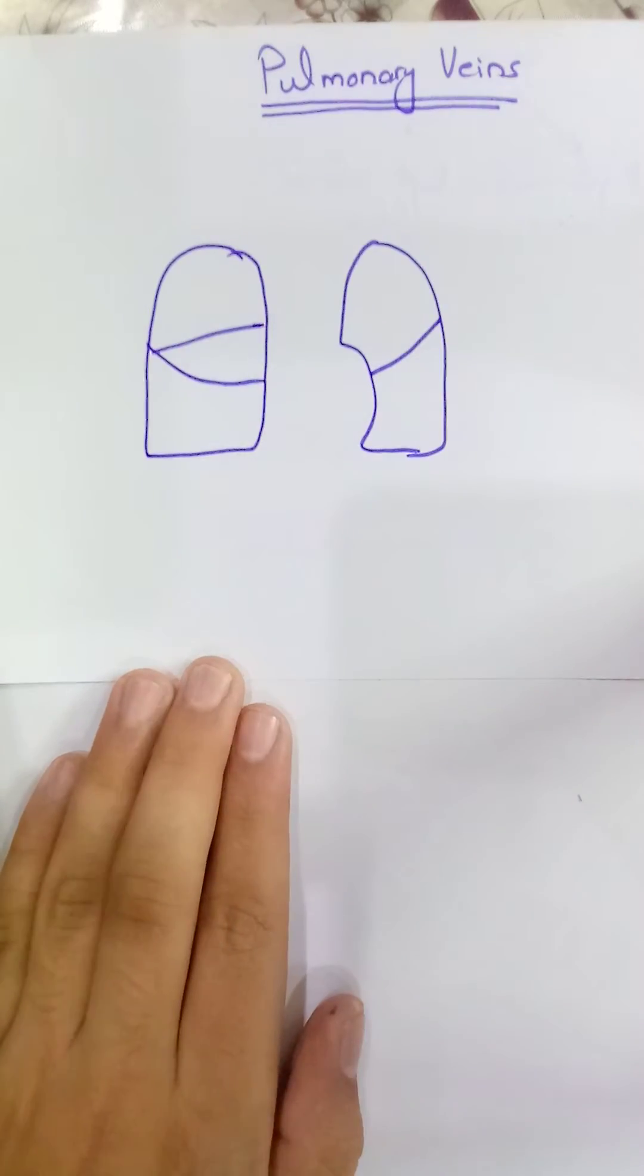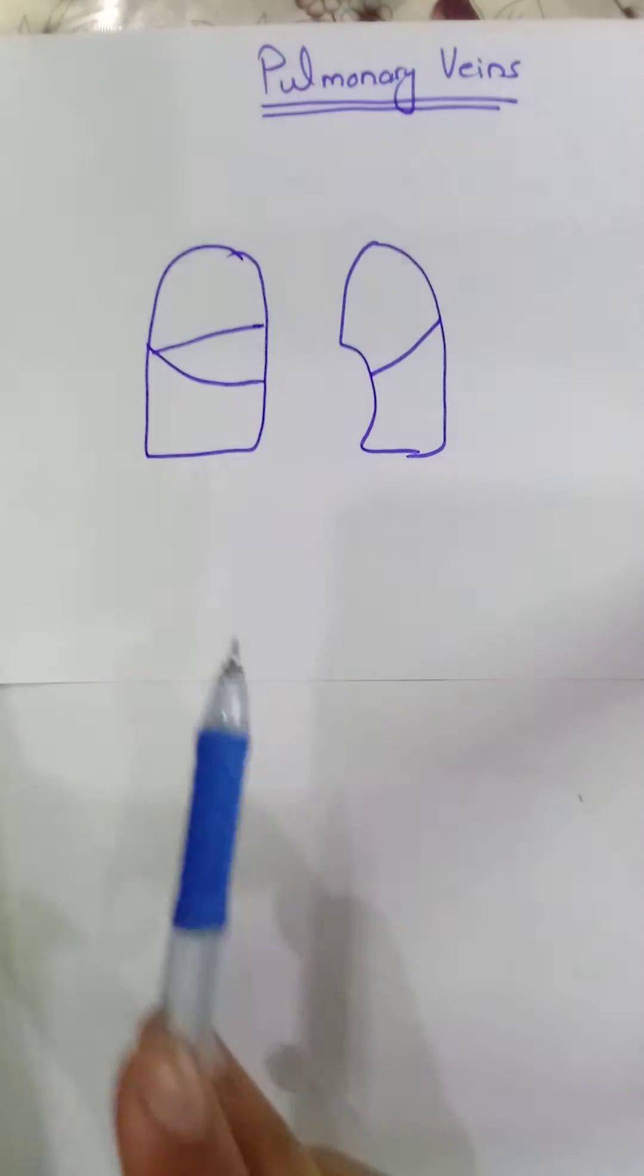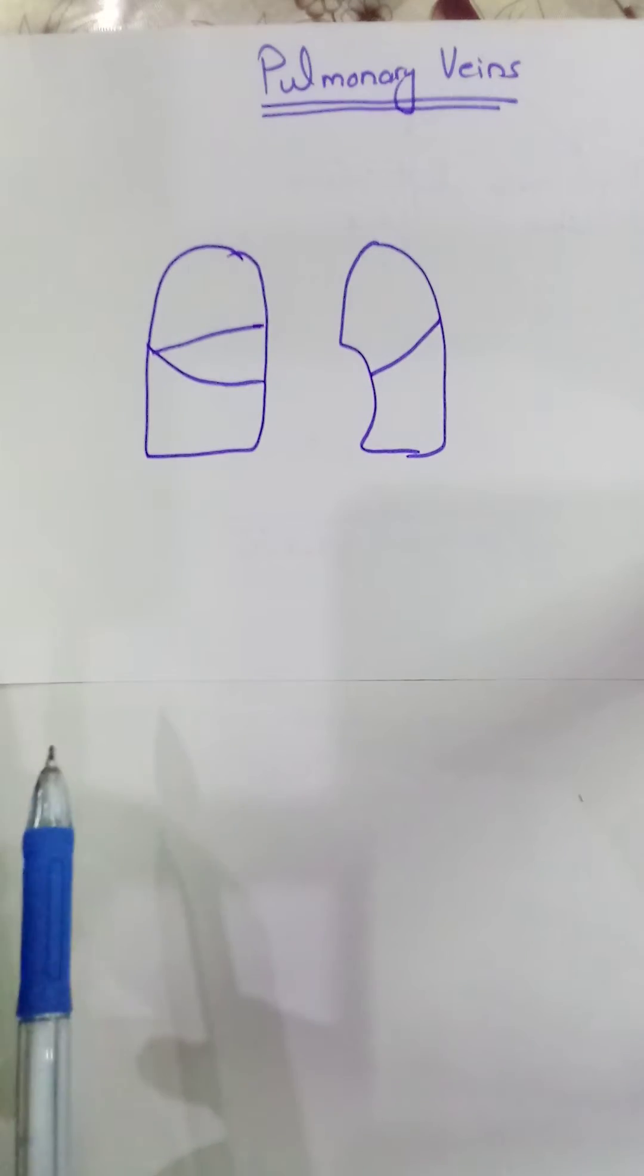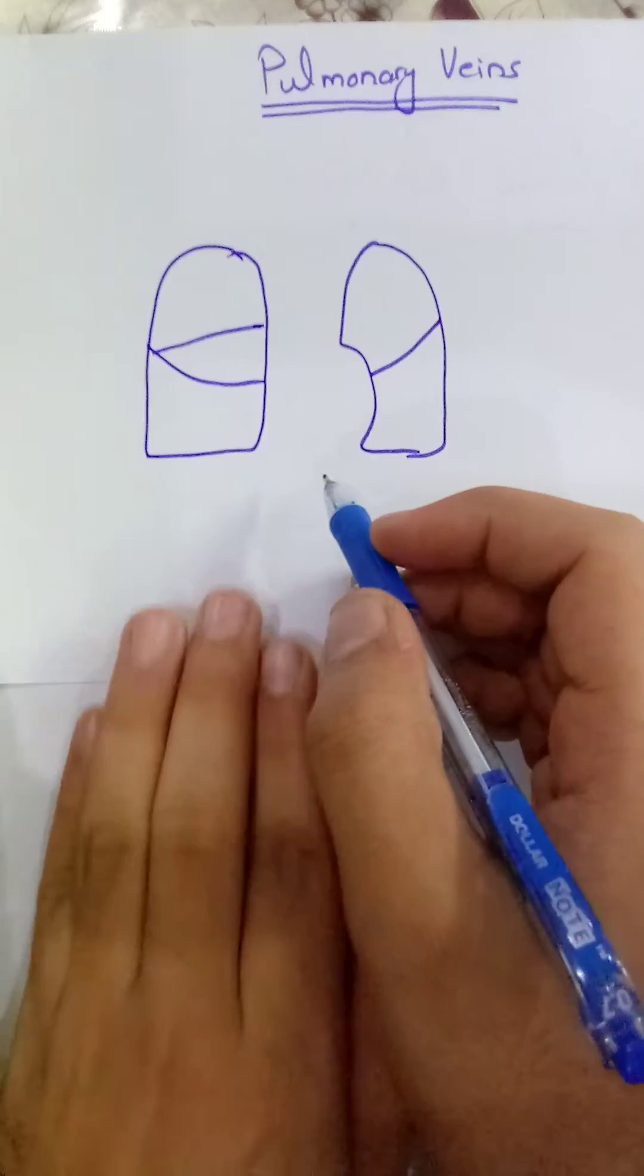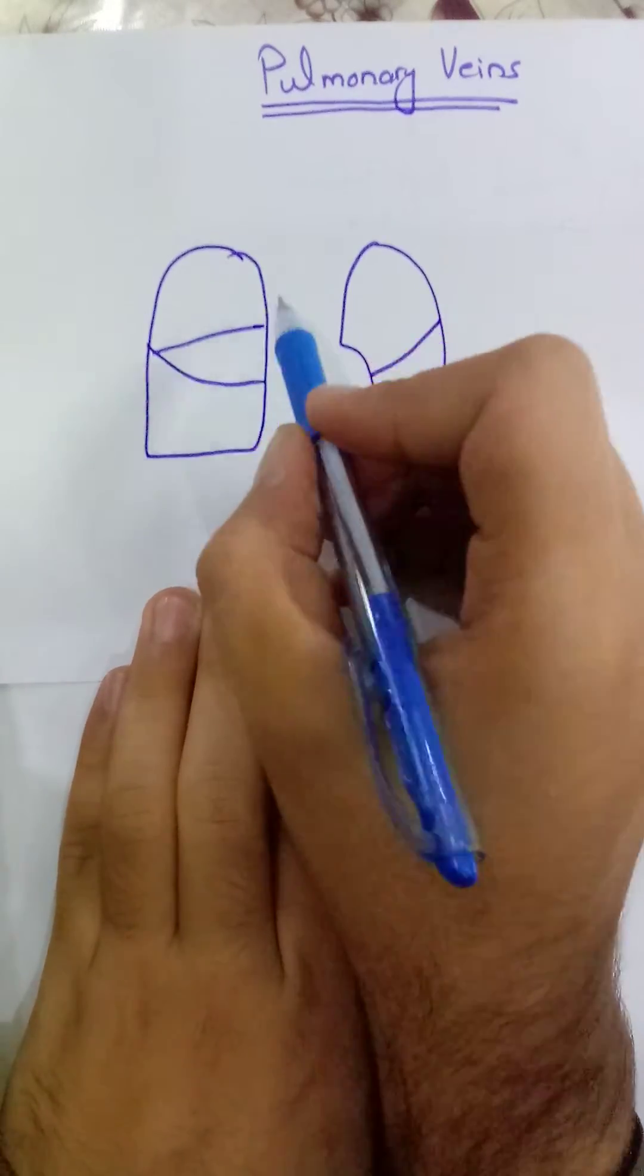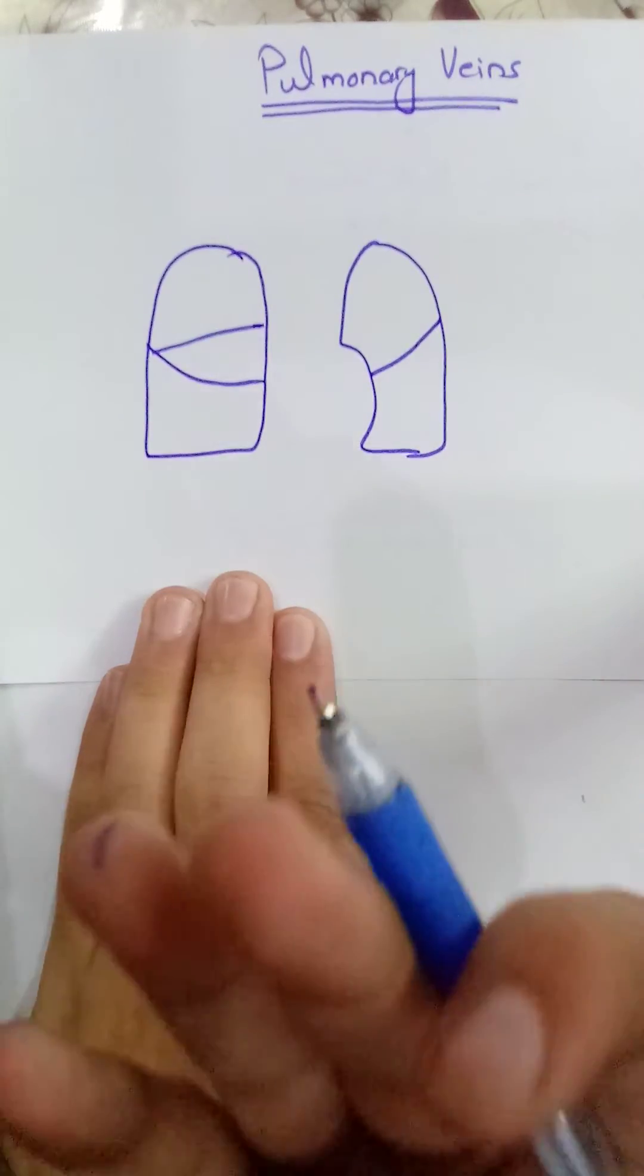The right lung has three lobes and the left has two lobes. We will see how the blood from the lungs is drained back into the heart. First of all, you must know that there are four pulmonary veins.